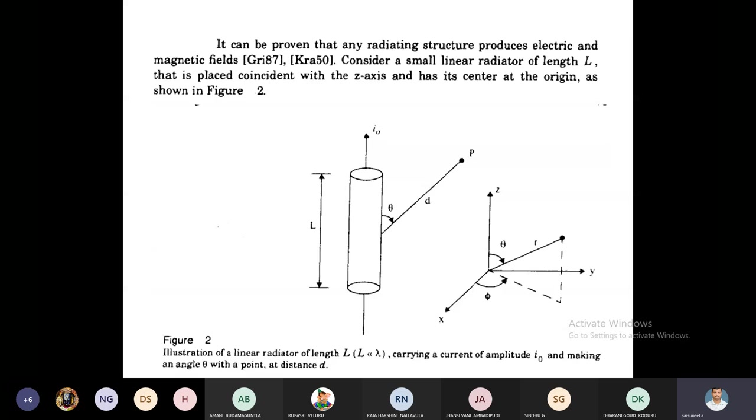Suppose we have to assume that this is a radiating structure, a cylindrical radiating structure, which is fixed and placed coincided with Z axis. We are taking coordinates XYZ. The radiating structure length is capital L, otherwise we call it linear radiator.